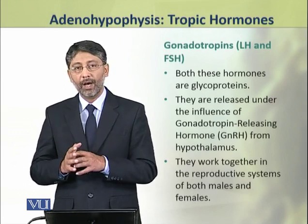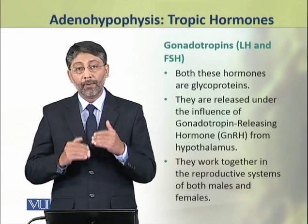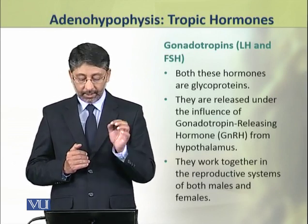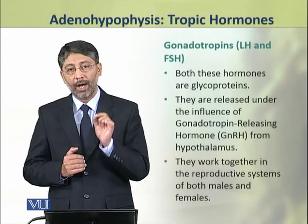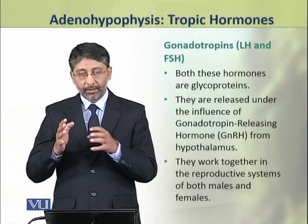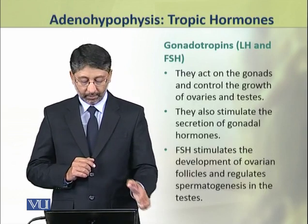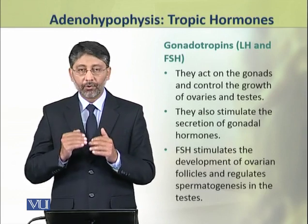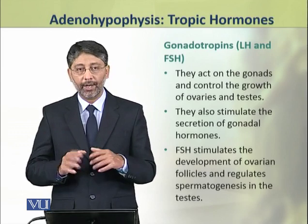The luteinizing hormone and follicle stimulating hormone, collectively called gonadotropins, are glycoproteins. They are released under the influence of gonadotropin releasing hormone, GnRH, from the hypothalamus. Both these hormones work together in the reproductive systems of both males and females. They act on gonads and control the growth of ovaries and testes, and also stimulate the secretion of gonadal hormones.